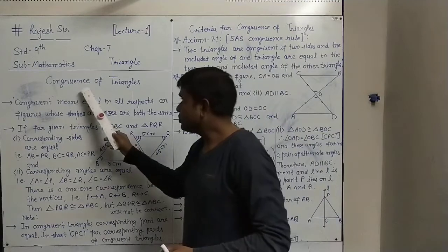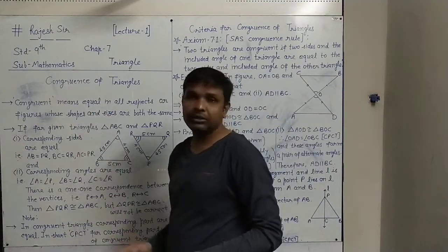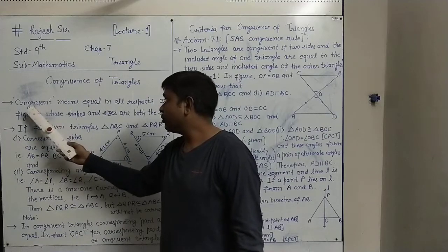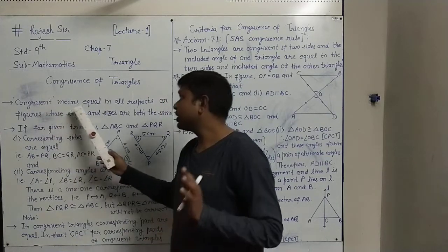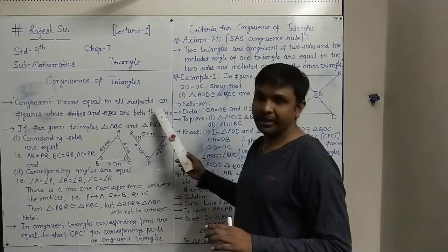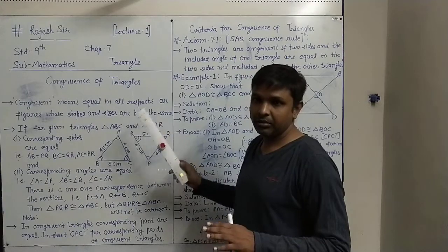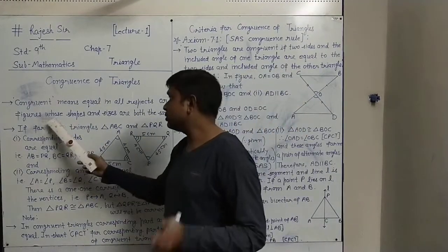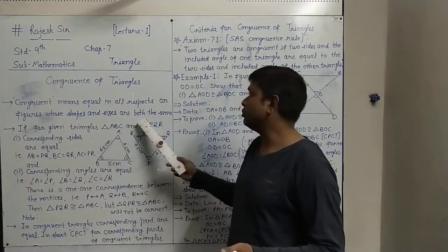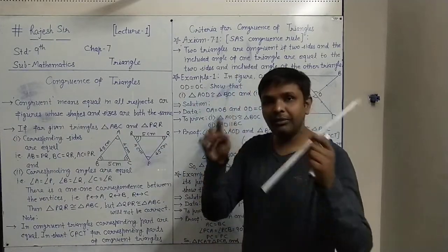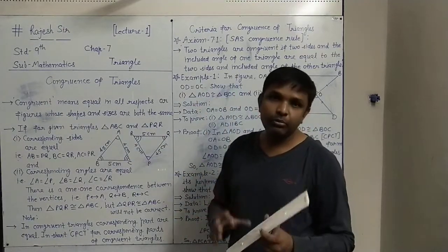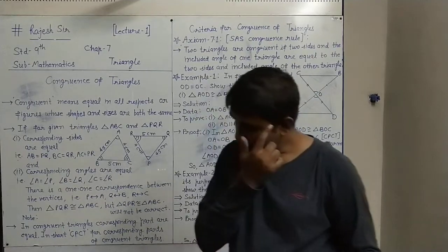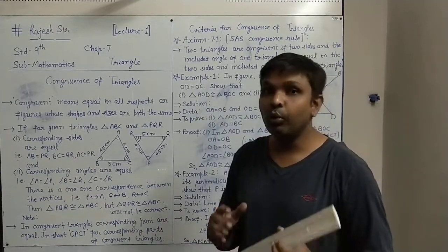In that, the very first word — congruence — what does this mean? Congruent means equal in all respects, meaning every way it should be equal. Or you can say: figures whose shapes and sizes are both the same. If both shape and size are the same for two given figures, we will say that both figures are congruent figures.